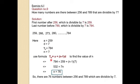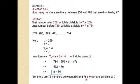We find n using the formula tn equals a plus n minus 1 into d. First term a is 259 — note that 256 is not the first term, since 256 is not divisible by 7. Common difference d is 7, and the nth term (last term) tn is 784. Substituting: 784 equals 259 plus n minus 1 into 7. Solving this equation, the answer is n equals 76. It means there are 76 numbers between 256 and 789 that are exactly divisible by 7.